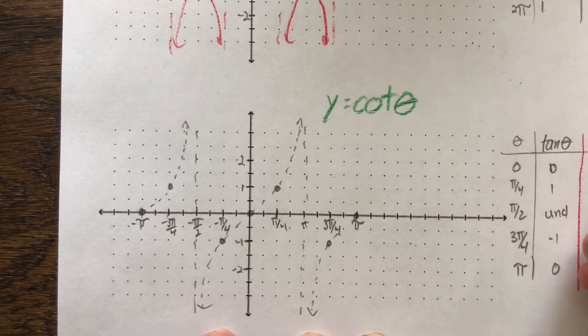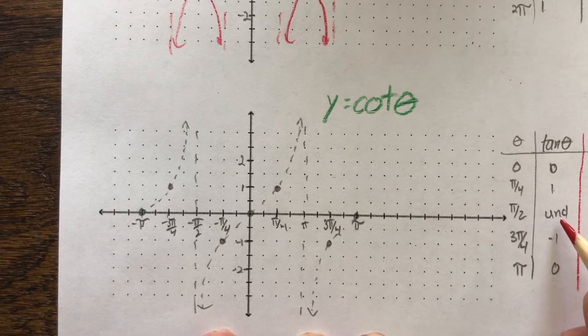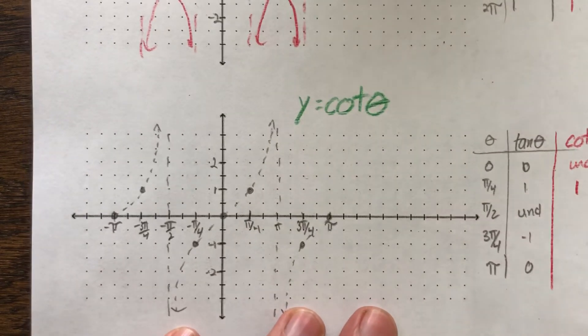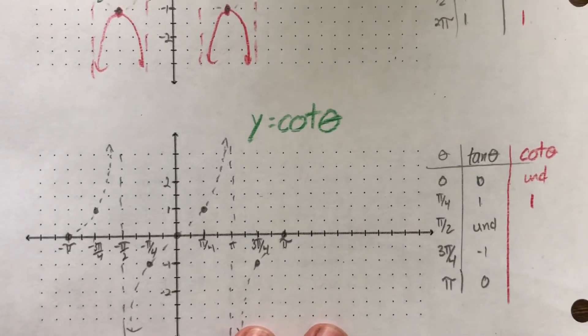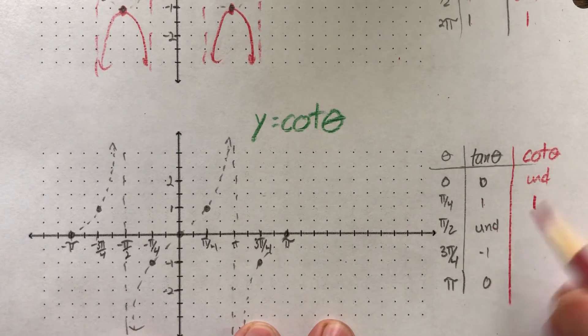Reciprocal of 0 is undefined. The reciprocal of 1 is 1. The reciprocal of undefined, okay, that's the kind of weird part. All right, well, think about what it means for something to be undefined.